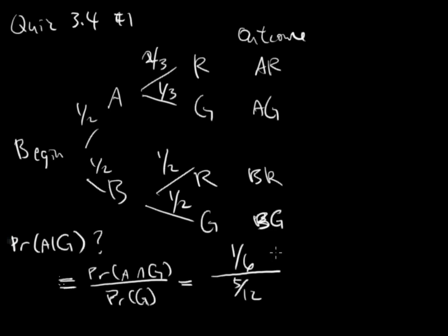So dividing by 5/12 is like multiplying by 12 over 5. And this cancels out. So the final answer is 2/5.